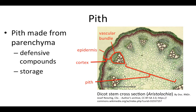The pith is the section in the center of the stem inside the vascular bundles. These are parenchyma cells, and they can store defensive compounds. They can also store a variety of other compounds such as water, sugar, and other organic substances.